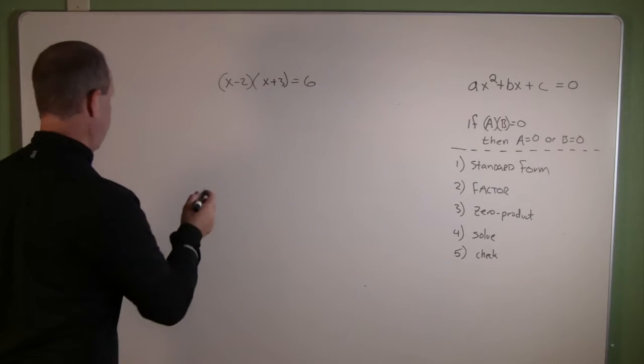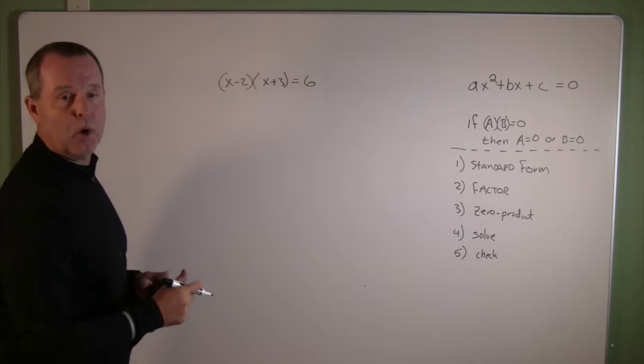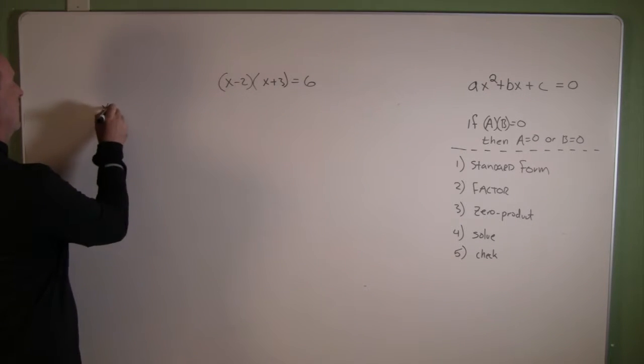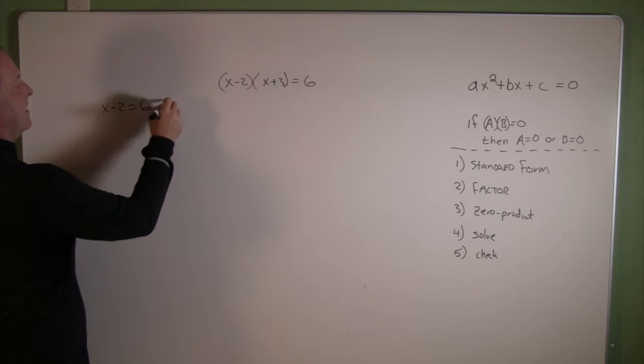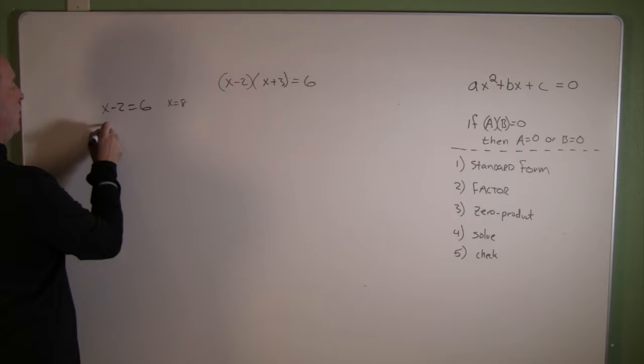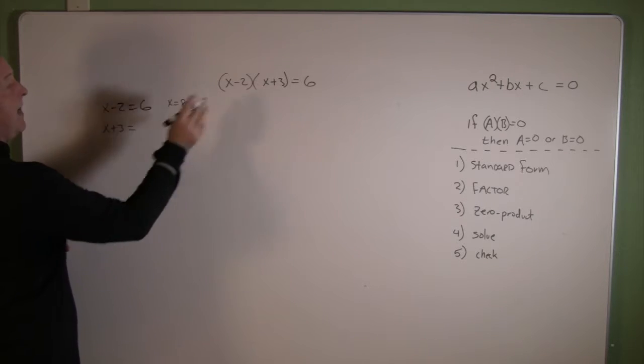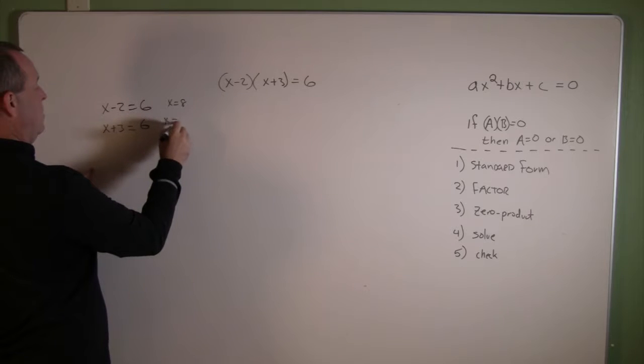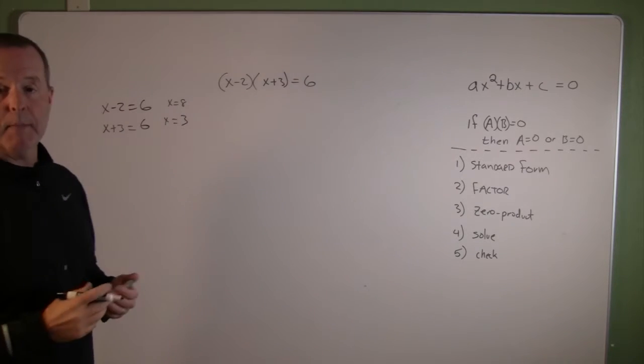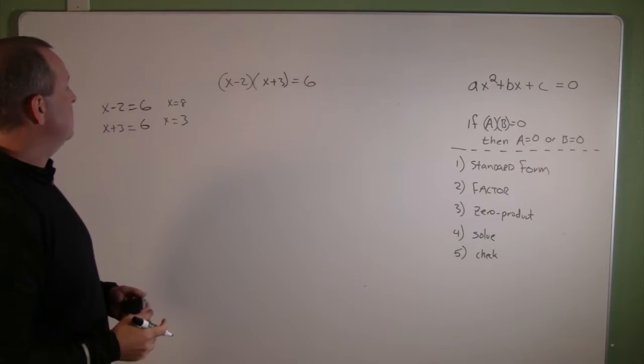Do I use that zero product principle and set x-2 equal to 6? Solve that, gives me x equals 8. And then x+3, set that equal to 6, that becomes x equals 3. So there's my two solutions.